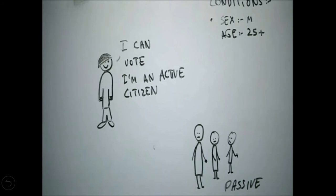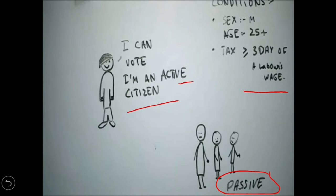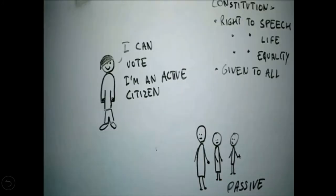Only men above 25 years of age who paid taxes equal to at least three days of a labourer's wage were entitled to vote in France, and they were known as active citizens. Those without this right were known as passive citizens. After that, the constitution also gave people certain rights, such as the right to speech, right to life, and equality before law — these rights were given to all citizens of France.